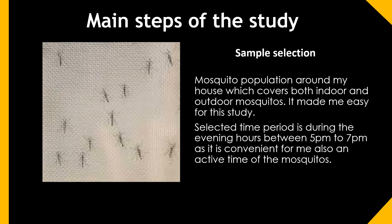Main Steps of the Study — Sample Selection: As mentioned in the previous slide, I selected samples as the mosquito population around my house, which covers both indoor and outdoor mosquitoes, which made the study easier for me. The selected time period is during the evening hours between 5pm to 7pm, as it is convenient for me and also an active time for mosquitoes.